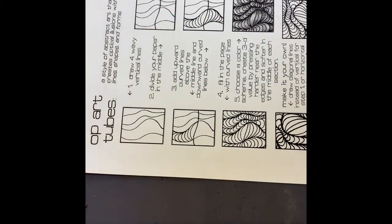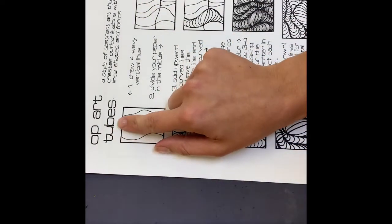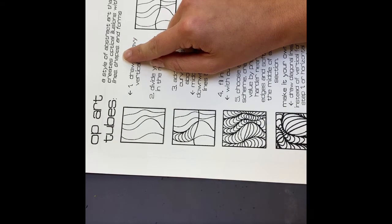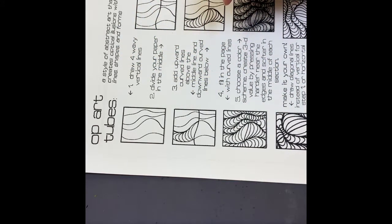Okay, I have our packet here and it starts at the top by saying op art tubes and tells you what it is. It's a style of abstract art that creates optical illusions with lines, shapes, and forms. So then we're gonna have step-by-step directions on how to make them.